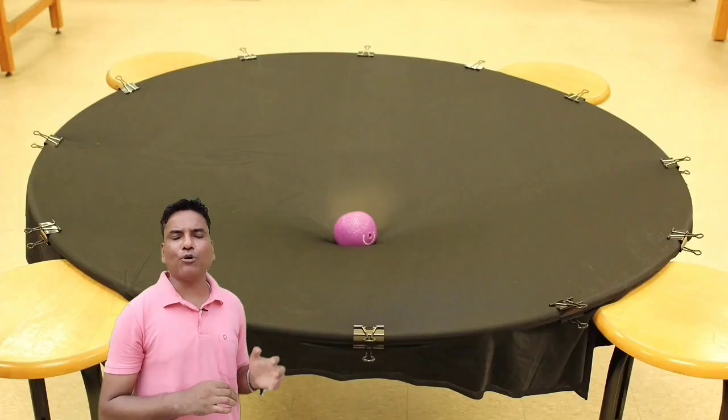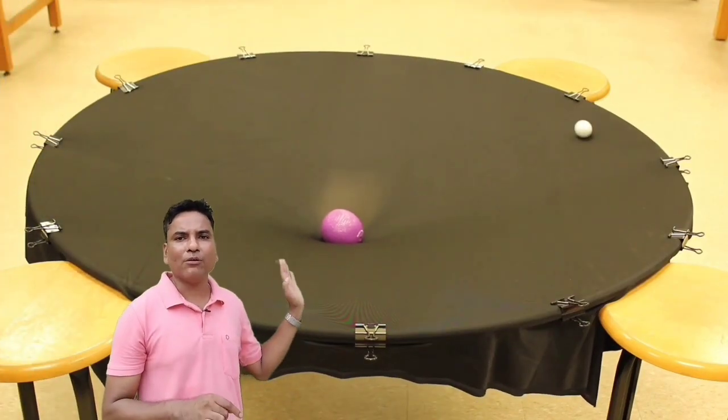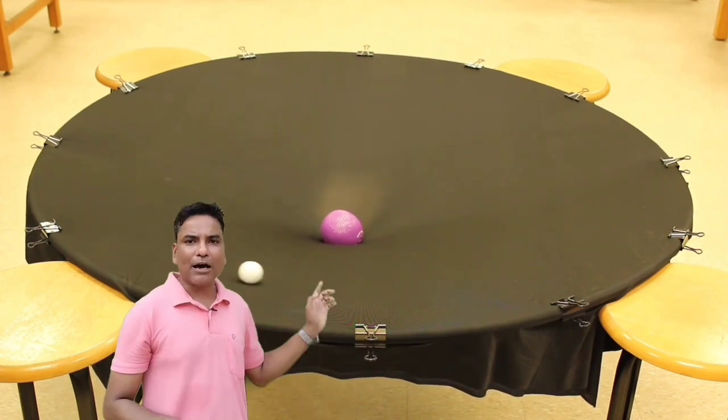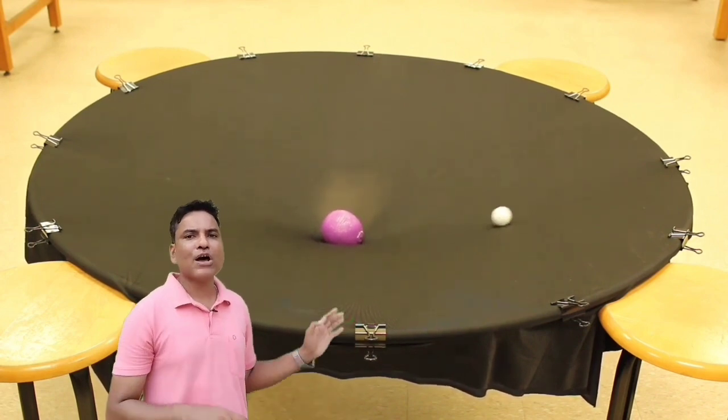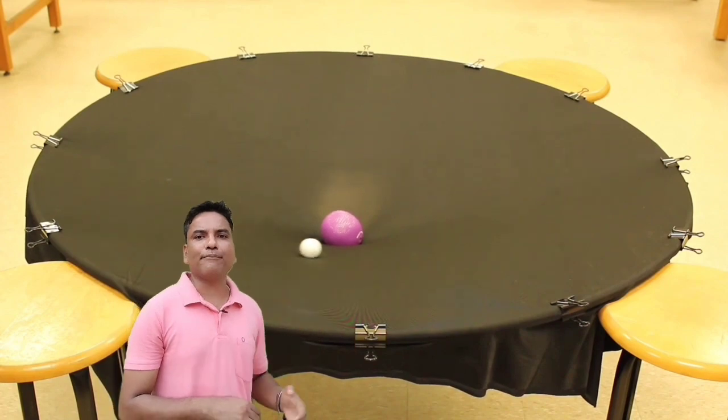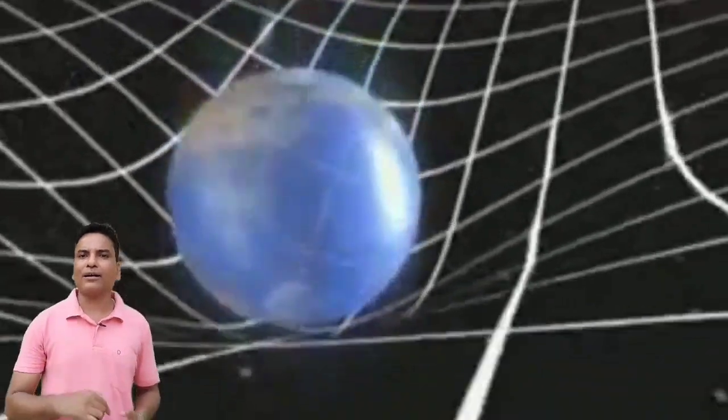In our above example, we threw the marble horizontally. But the marble revolved around the massive object due to curvature of the cotton fabric. Similarly, our Earth revolves around the Sun due to space-time curvature, which is made by the Sun. And the Moon revolves around the Earth.